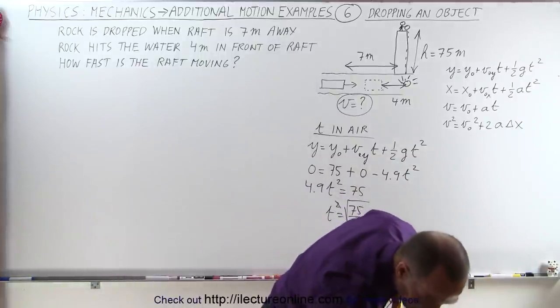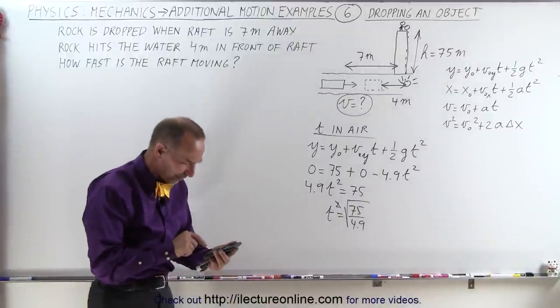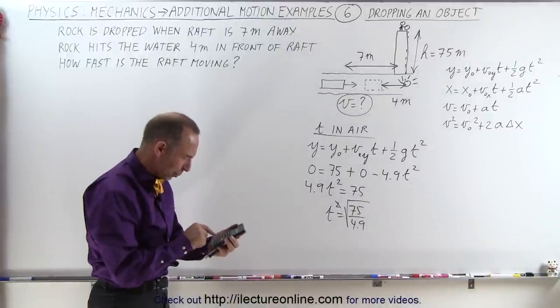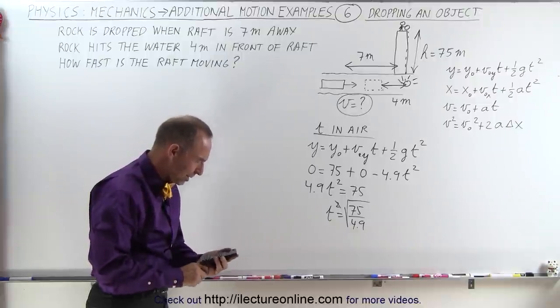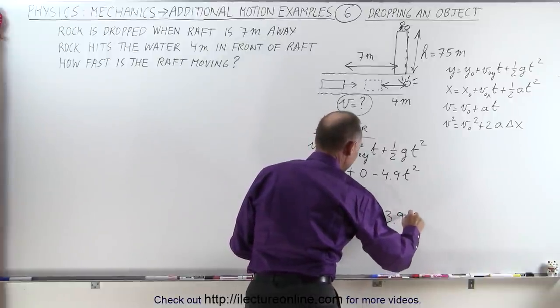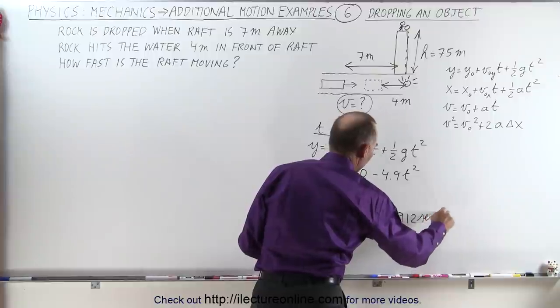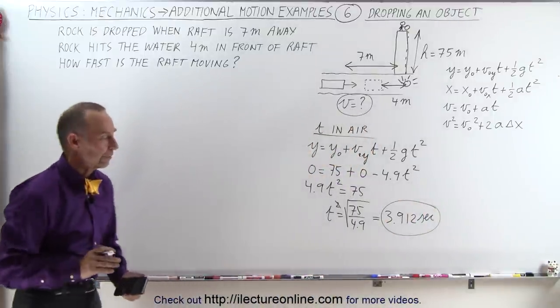So let's go ahead and calculate. This is 75 divided by 4.9, take the square root of that, and we get 3.912 seconds for the time that the rock is in the air.